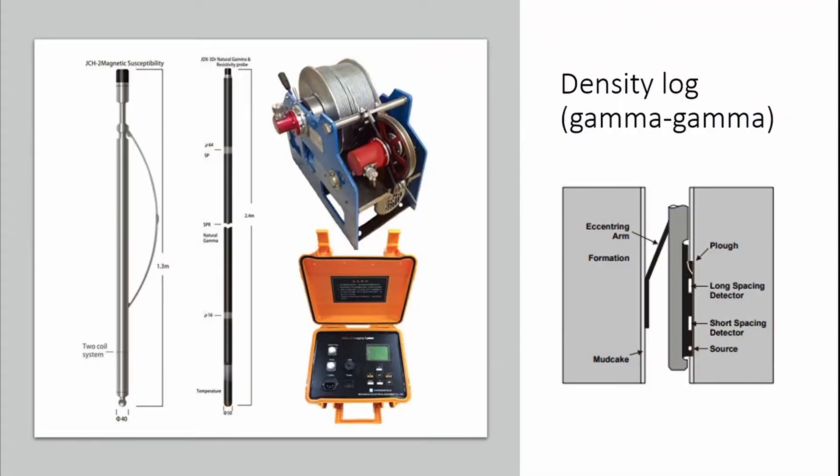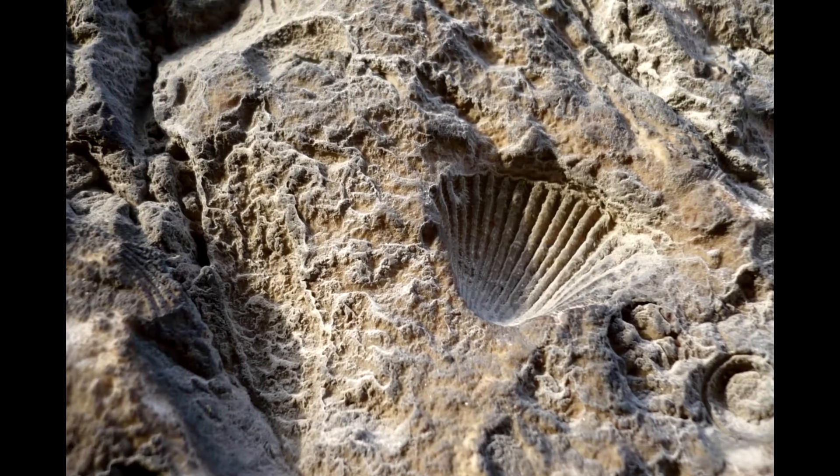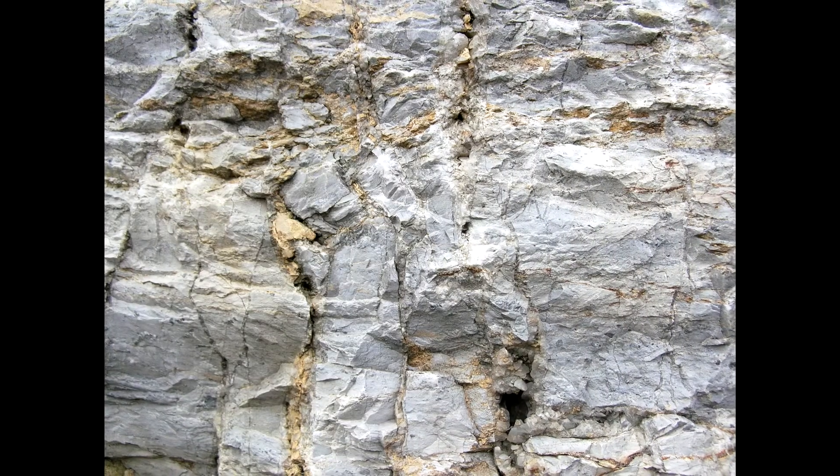Density logs, or gamma-gamma logs, use emission of gamma rays, typically from the isotope cesium-137, into the formation and detect gamma rays that are scattered back. These instruments measure average electron density, which strongly correlates with bulk density. Typically, a predefined matrix is used, such as sandstone, limestone, or dolomite, but readings can be adjusted after collection.